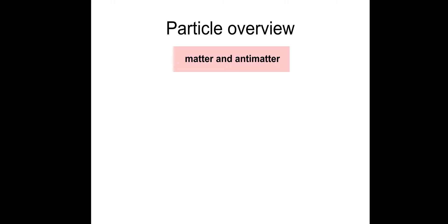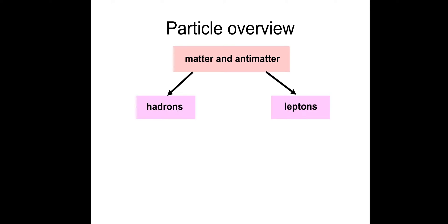So there's matter and antimatter. On the left-hand side we've got hadrons, right-hand side we've got leptons — fundamental particles. The hadrons come into two groups: we've got baryons and mesons. That's an overview from Lesson 5.